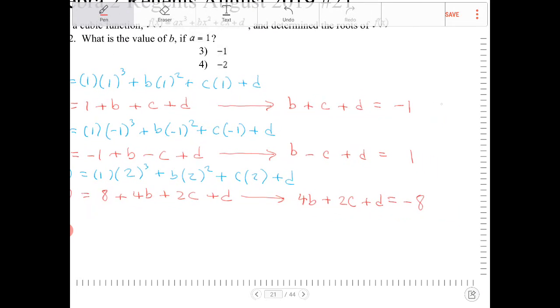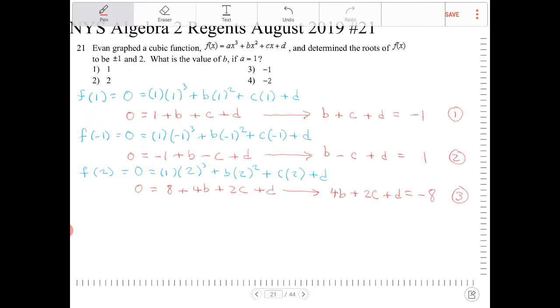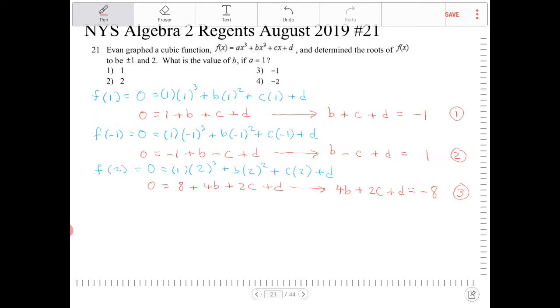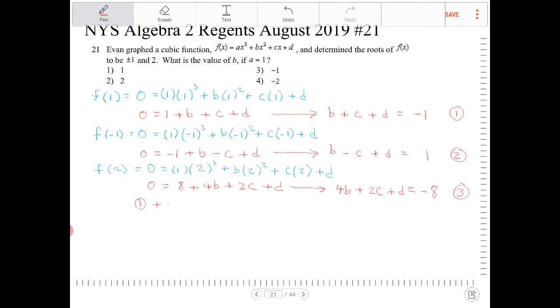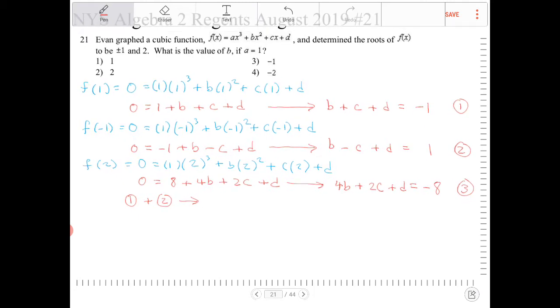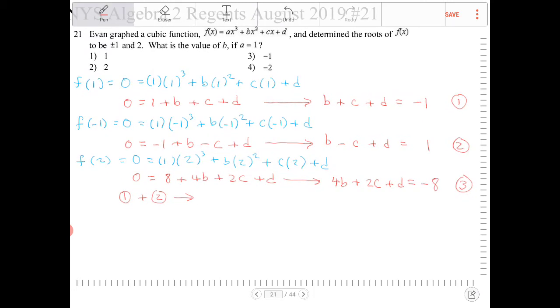And I'm going to number this as equation 1, equation 2, and equation 3. And the way in which I'm going to solve this is, we have to be systematic here. So, I am going to take equations 1 and 2, and I am going to add them together. And the result of this, if I add equations 1 and 2 together, I will eliminate c. So, I end up with 2b plus 2d equals 0.